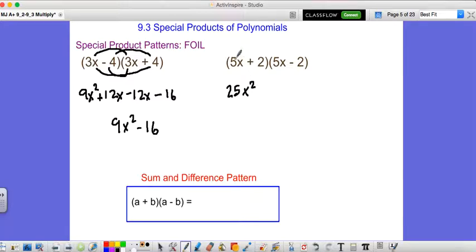Then we go outside. 5x times negative 2 is negative 10x. Inside is 2 times 5x is plus 10x. Last terms, 2 times negative 2 is minus 4. You'll see once again negative x plus 10x that those middle two terms disappear. We get 25, oops, 25x squared minus 4.